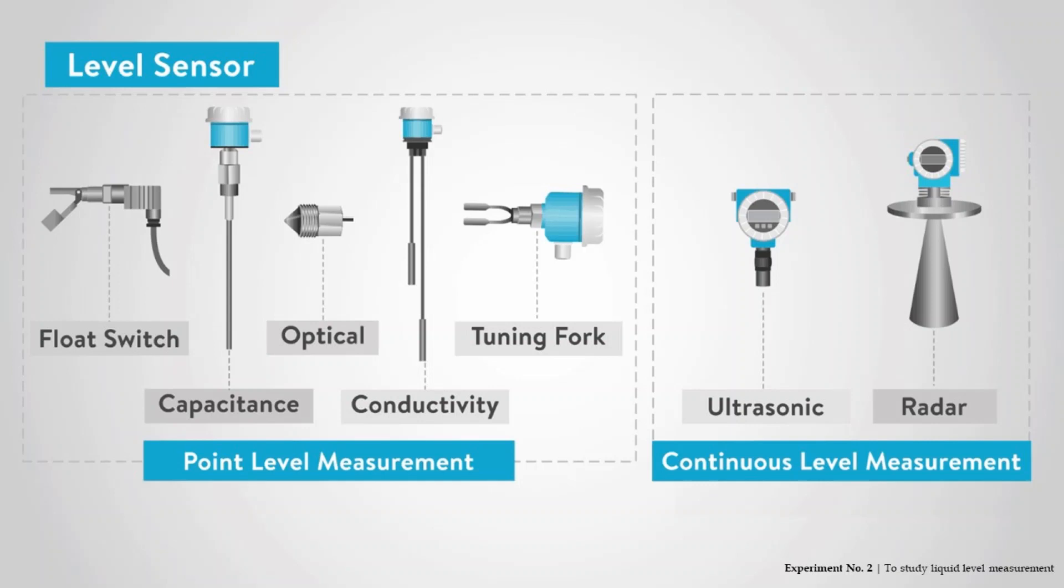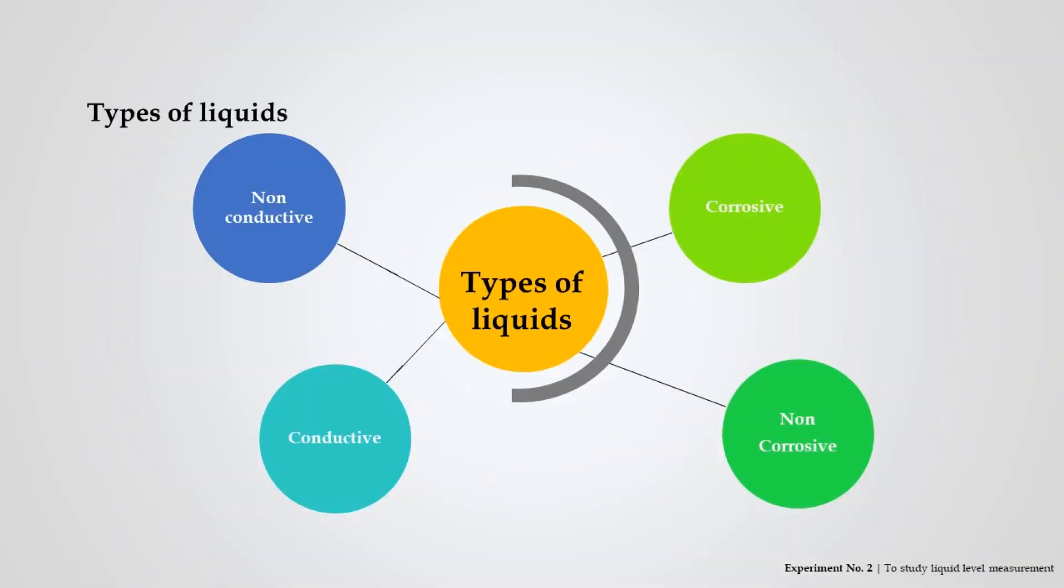Point or continuous liquid level measurement methods contain the following commonly used methods. Liquids used for level measurement can be corrosive, non-corrosive, conductive, or non-conductive.